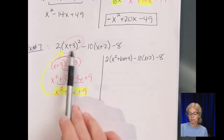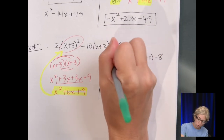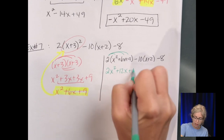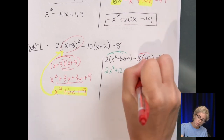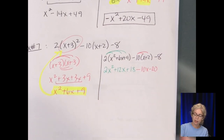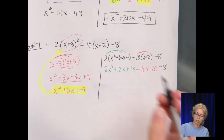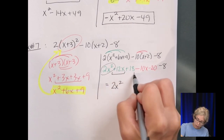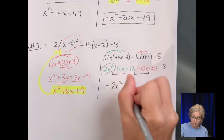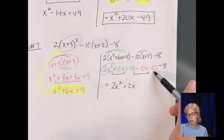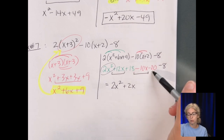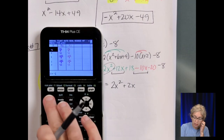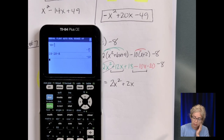Distributing the 2 through the first trinomial: 2x squared, 12x, 18. Then distributing the negative 10: minus 10x, minus 20. And bring along the negative 8. Combining by highest to lowest exponent: the only x squared is 2x squared. The x terms are 12x minus 10x, which is 2x. For the constants: 18 minus 20 is negative 2, and negative 2 minus 8 is negative 10. So our final answer is 2x squared plus 2x minus 10.